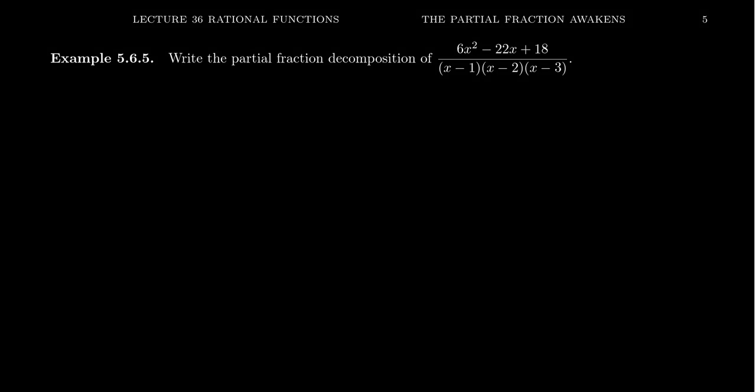Let us write the partial fraction decomposition for the rational function 6x squared minus 22x plus 18 over x minus 1 times x minus 2 times x minus 3. Now, fortunately, this is already a proper fraction. The numerator is degree 2, the denominator is degree 3, and the denominator is already factored for us.